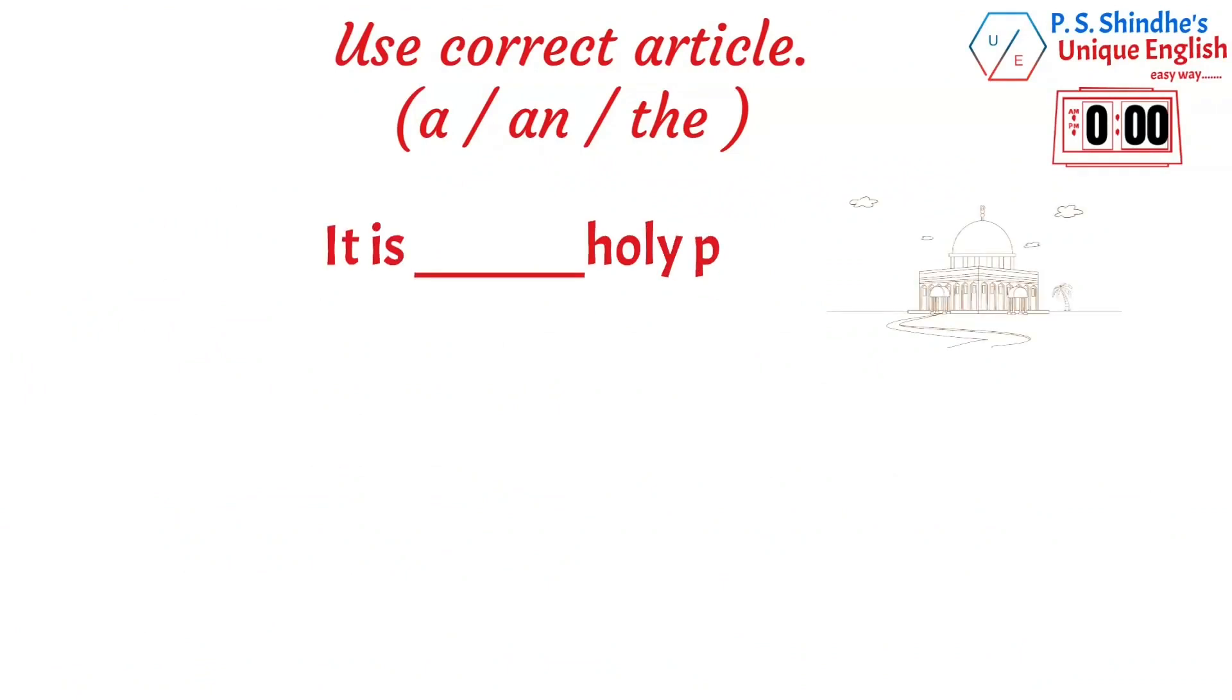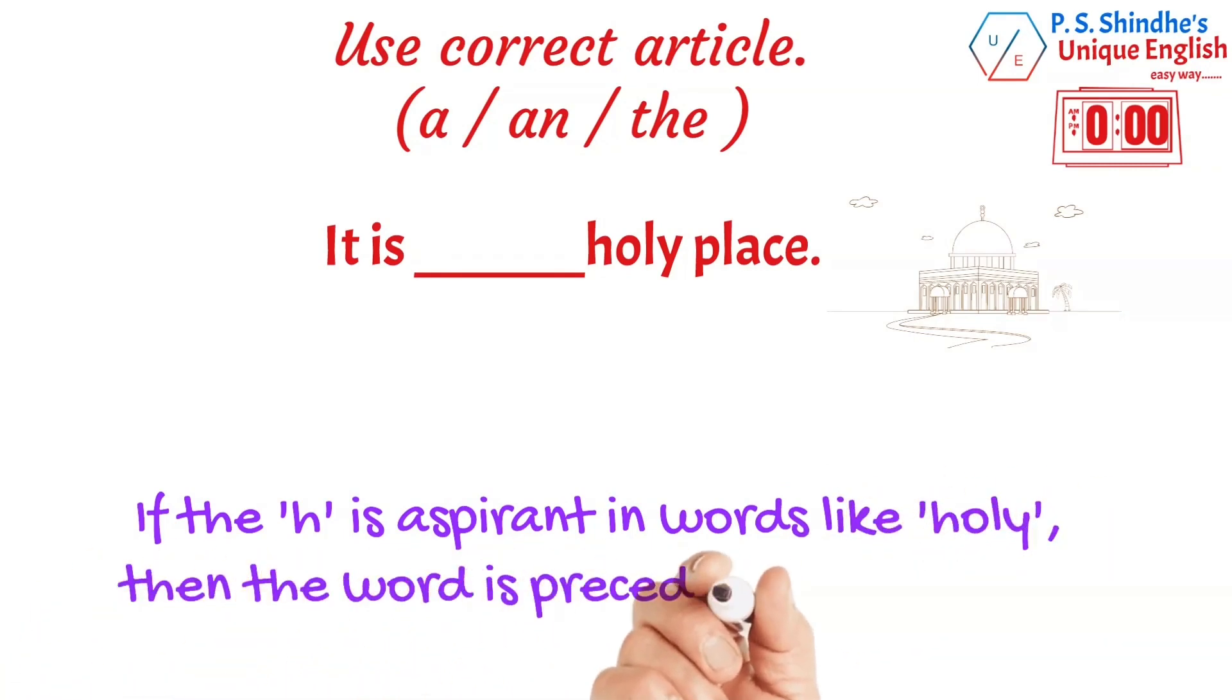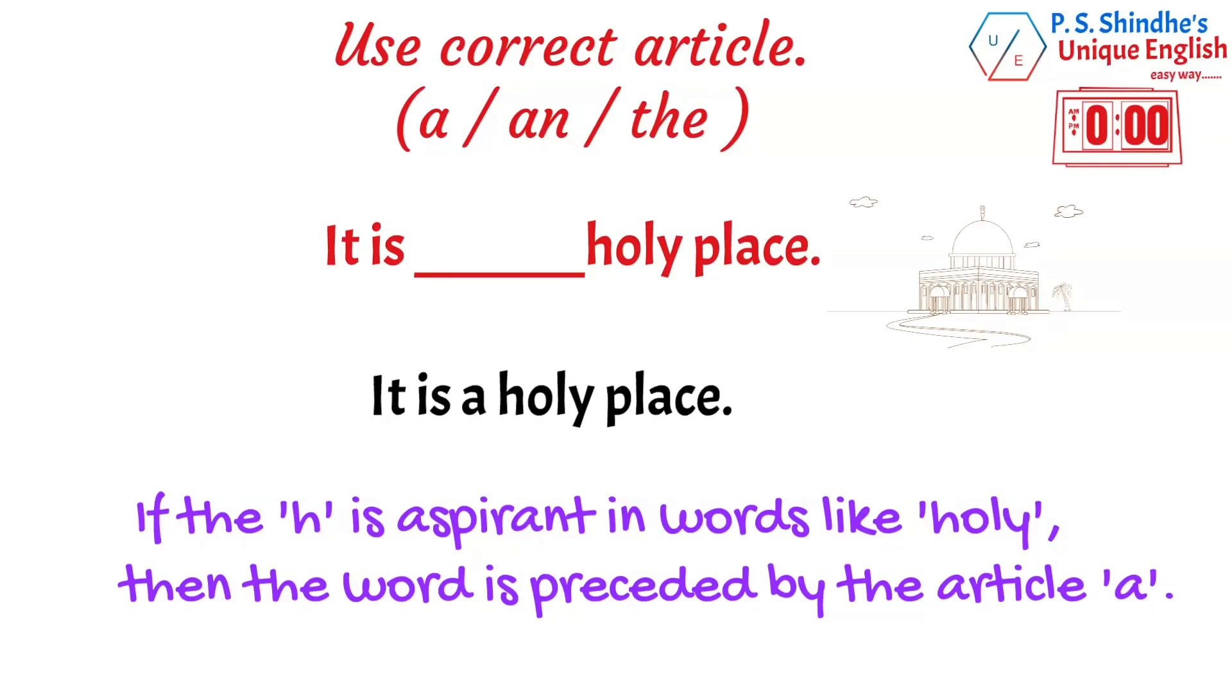It is blank holy place. It is a rule with the words beginning with h that if the h is aspirant, then the word is preceded by the article a. If h is silent, it takes the article an. Here, the answer would be it is a holy place.